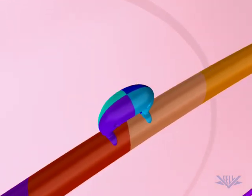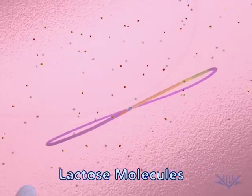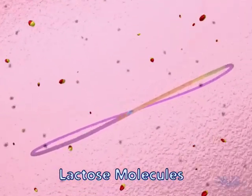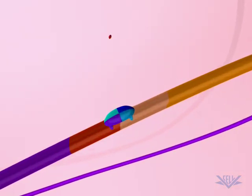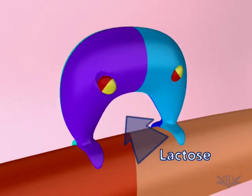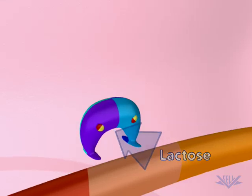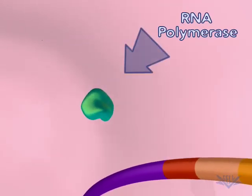Lactose is the lac operon inducer molecule. After first appearing in the cellular environment, lactose passively enters the E. coli cell and binds to the repressor molecule. This binding releases the repressor from the controlling region.